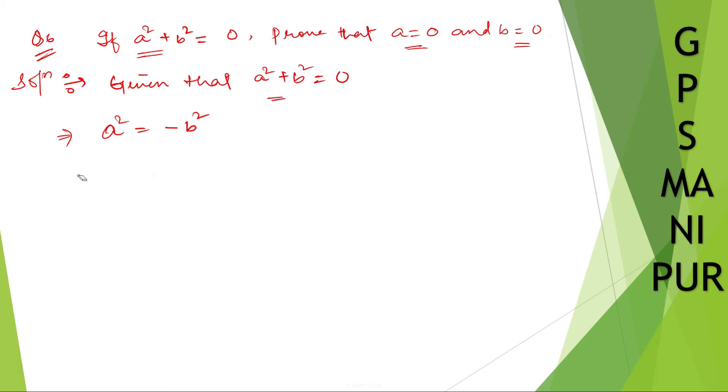For example, if you put a = 2, then 2² = -b², which means -b² = 4, so b² = -4. But this doesn't exist - there is no real number whose square equals -4. This kind of number doesn't exist.